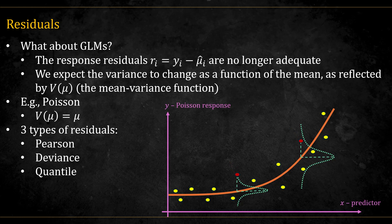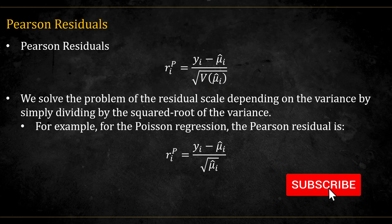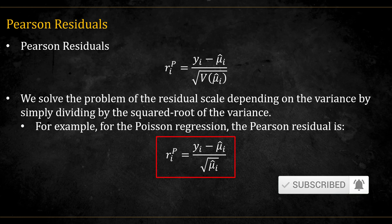So in GLMs there are three types of residuals that are used instead of the raw residuals: Pearson residuals, deviance residuals, and quantile residuals. The Pearson residuals are defined like this. We simply divide by the square root of the variance function. This is a rather straightforward solution to the problem. For example, for the Poisson regression, the Pearson residuals will be equal to this.